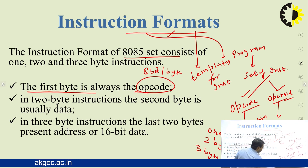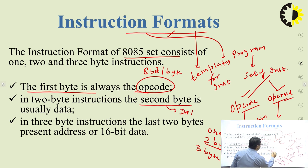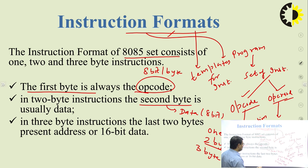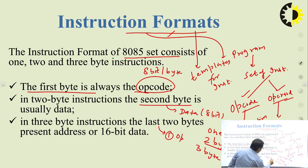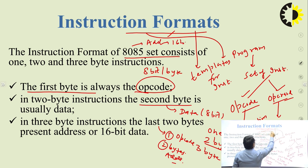In the two-byte instruction format, the first byte will be the opcode and the second byte will always be data. So in the two-byte size instruction, one byte is always the opcode and the second byte is the data, also of eight bits. The three-byte instruction format has the first byte as opcode and the remaining two bytes as the address. Since in the 8085 microprocessor the address is 16 bits, specifying the address in the instruction format requires two bytes.